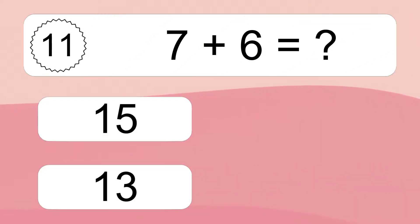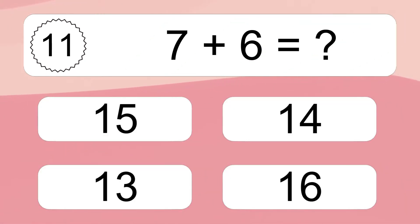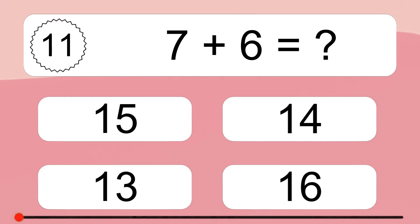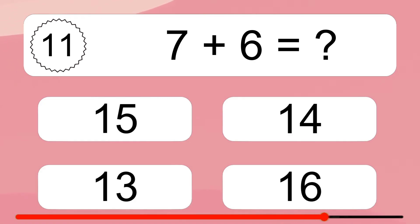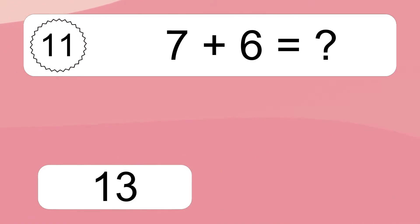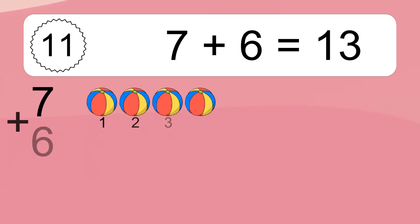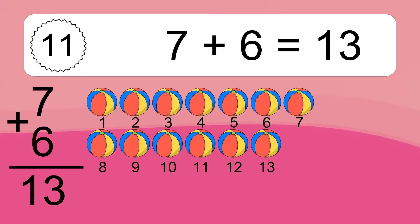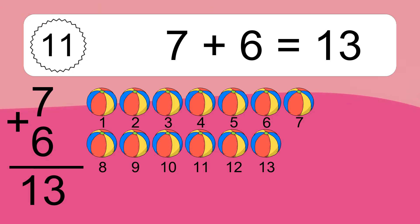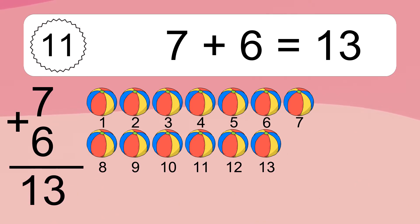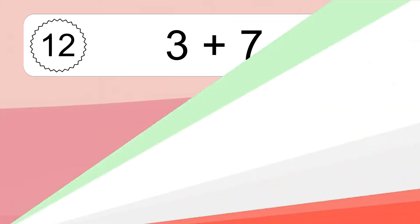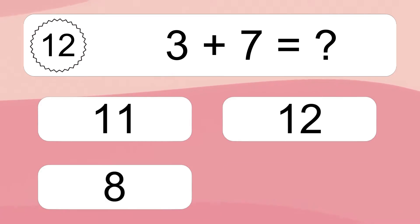7 plus 6 equals what? 7 plus 6 equals 13. Let's count it. 1, 2, 3, 4, 5, 6, 7, 8, 9, 10, 11, 12, 13.